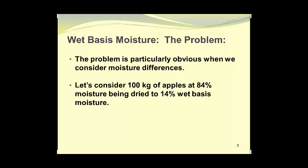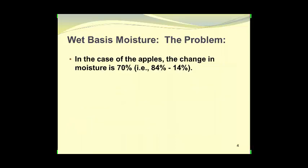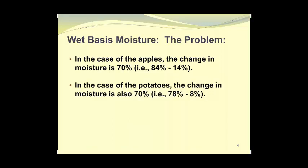Let's look at 100 kilograms of apples at 84% moisture being dried to a final moisture content of 14% on a wet basis. We will compare it to drying 100 kilograms of potatoes from 78% moisture to a final moisture of 8%. In the case of the apples, the change in moisture is 70% — that is, 84% minus 14%. In the case of the potatoes, the change in moisture is also 70% — that is, 78% minus 8%.